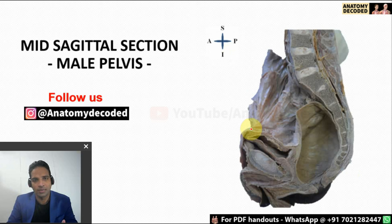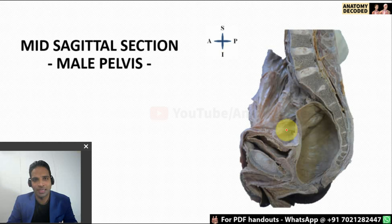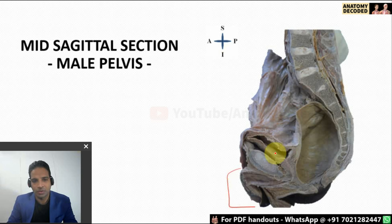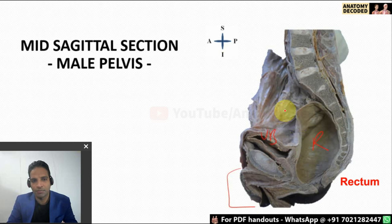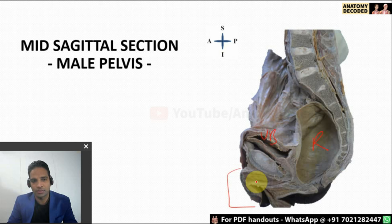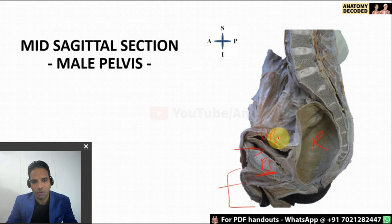Now let's look at the midsagittal section of male and female pelvis. The first thing you will be asked is whether it is a male or female pelvis. In a male pelvis, the external genitals may be seen; if not, look for the organs present. Here you can see the urinary bladder and the rectum — in between them there is no uterus, so this is a male pelvis midsagittal section. From anterior to posterior: the penis, the pubic symphysis, the retropubic space behind the pubis, the urinary bladder, the rectovesical fold of the peritoneum, the rectum, and the sacrum.